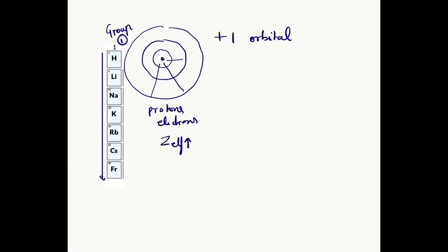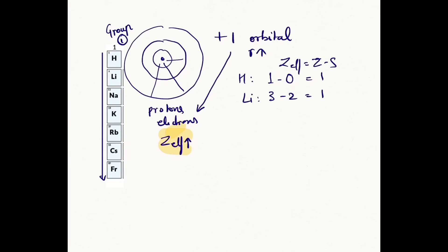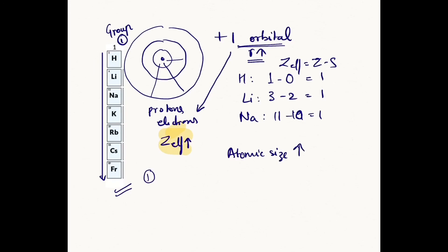But the fact that another orbital is being added each time we go down the group is so significant that it overpowers that assumption, and so the radius increases. In the case of hydrogen: 1 minus 0 equals 1. For lithium: 3 minus 2 equals 1. For sodium: 11 minus 10 equals 1. Throughout group one, the effective nuclear charge is the same constant value of one, so the atomic size is determined by the number of orbitals being added each time.